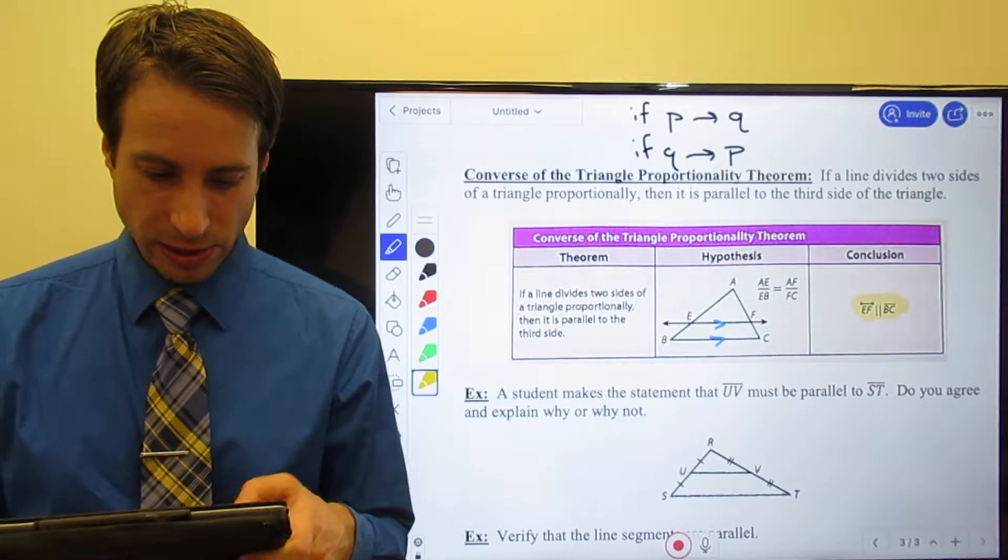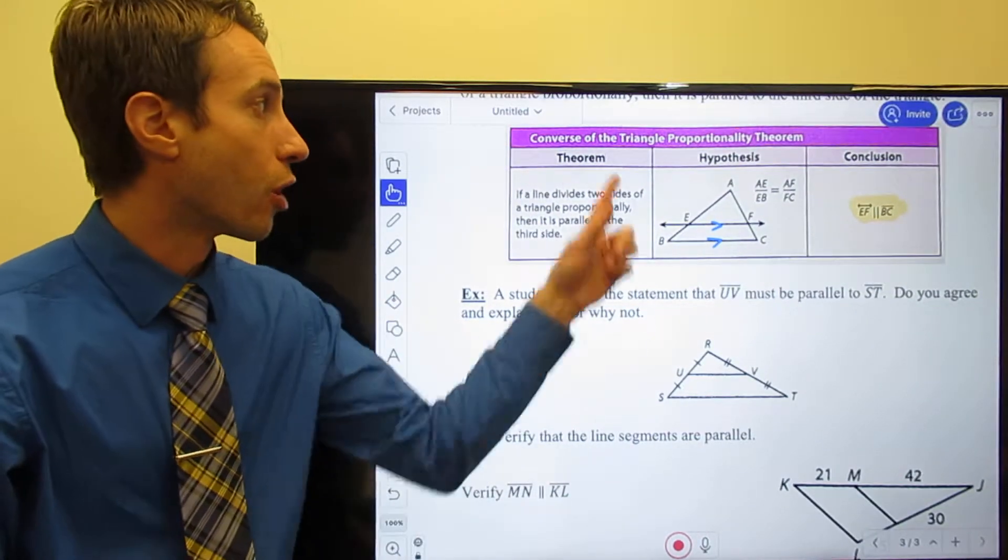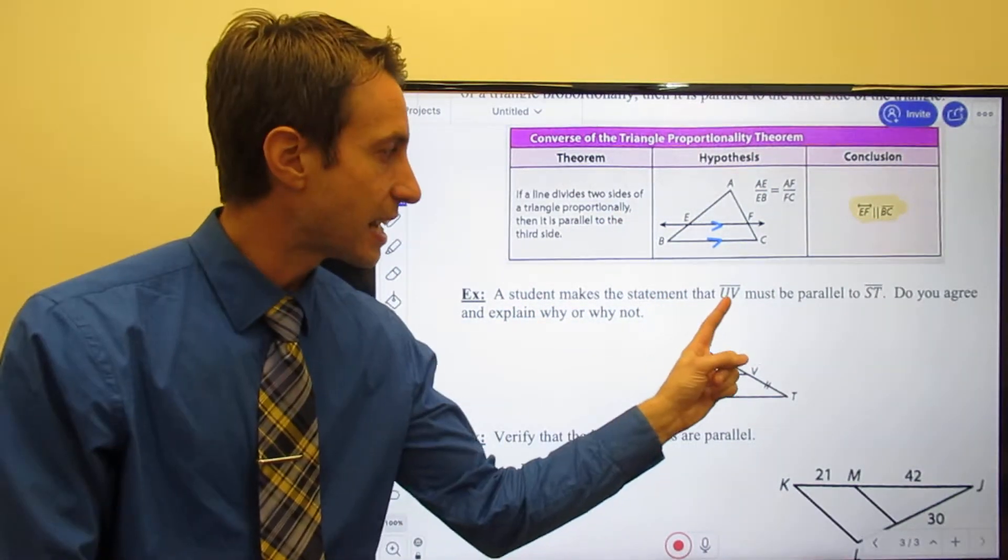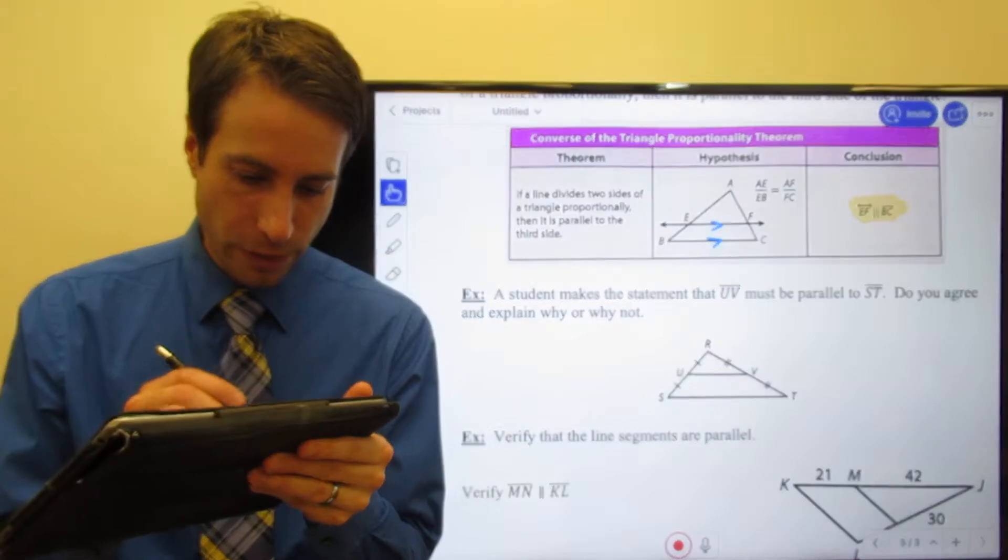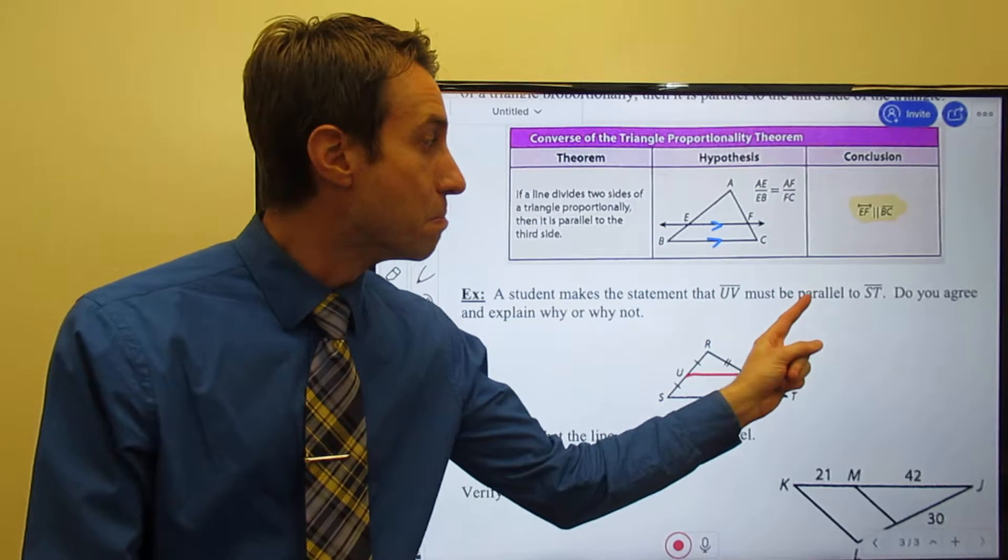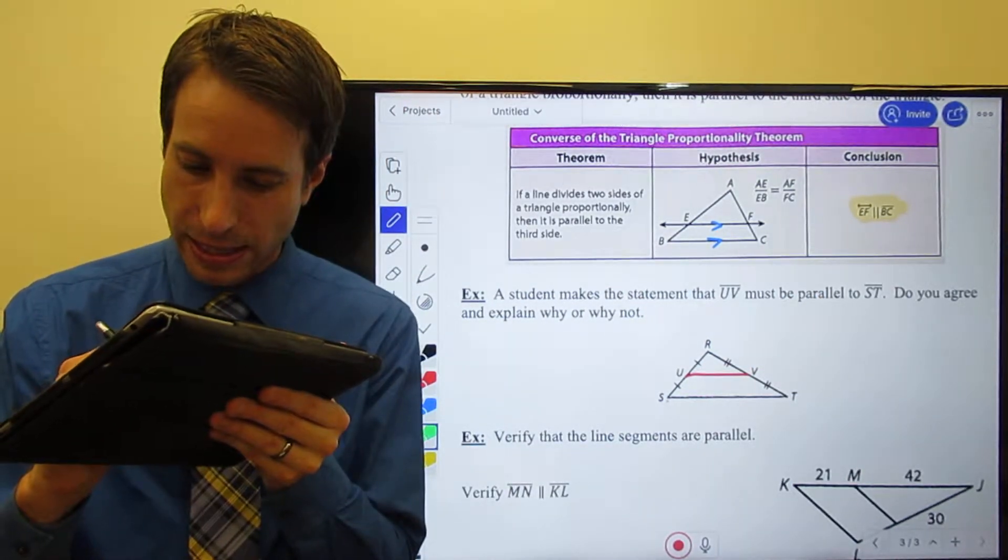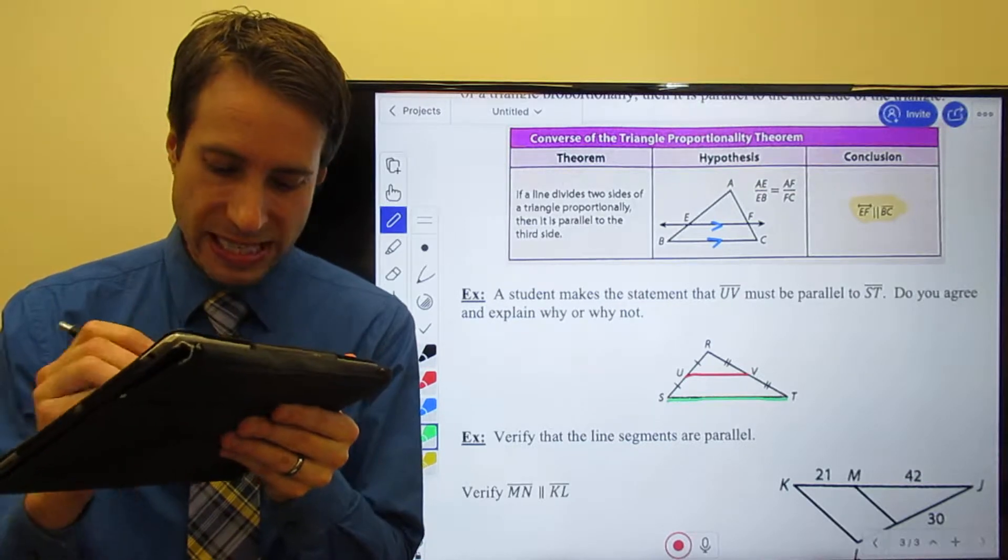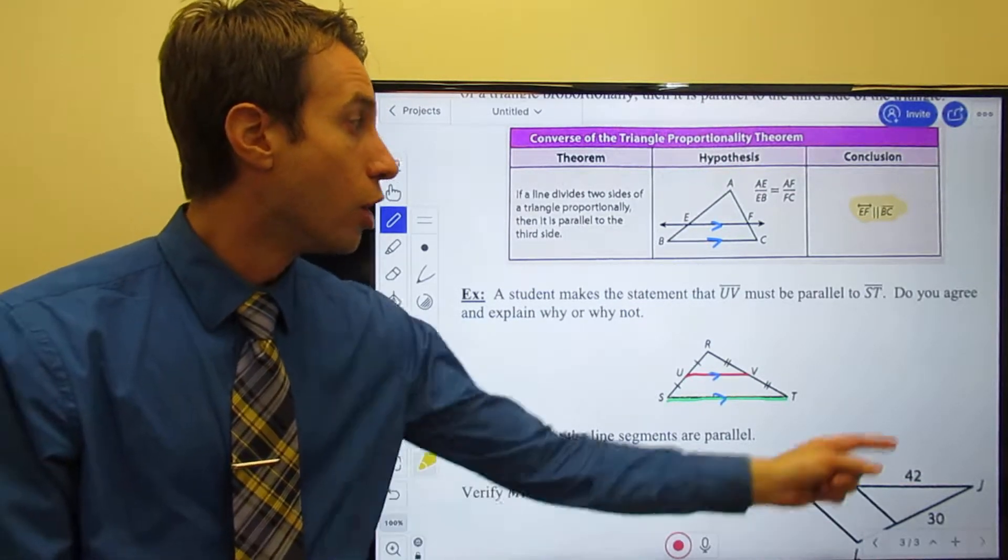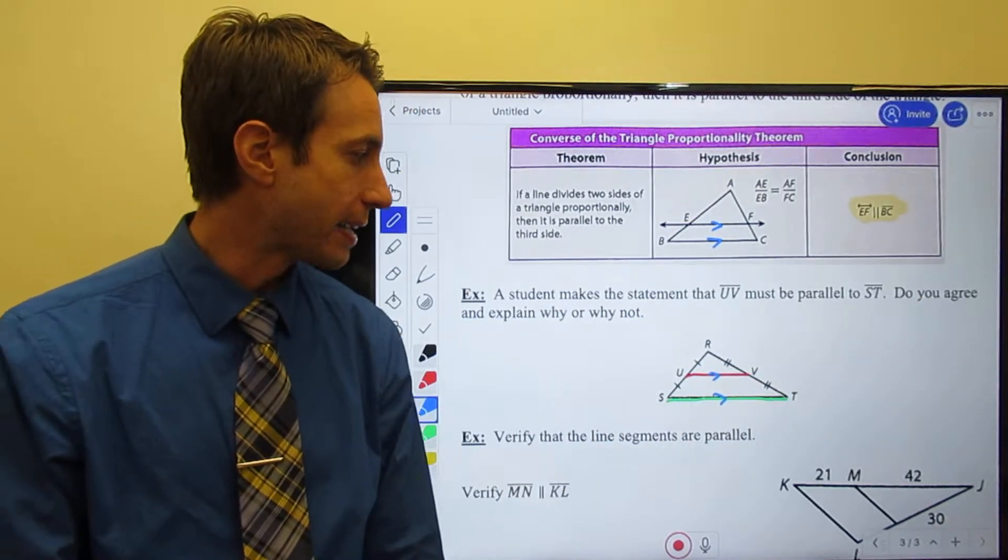Let's go ahead and take a look at how this works. What I've got for you here is just a little quick question to check and see if you get what's going on here with this theorem. A student makes the statement that UV, here is UV right here in red, makes the statement that UV must be parallel to ST. Let me put ST in green. And the student is saying those guys are parallel. Do you agree and explain why or why not?